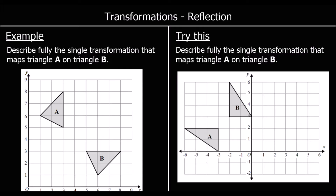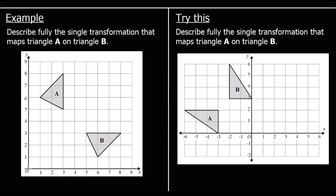Here is a different reflection. This time it hasn't been reflected in a straight horizontal or vertical line — it's been reflected in a diagonal line. There's a really common line used for reflections, and it is the diagonal line called y equals x. This line is called y equals x because at every point along the line, the y value and the x value are the same.